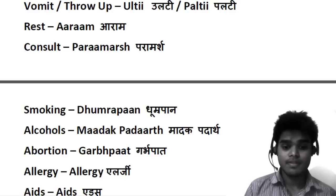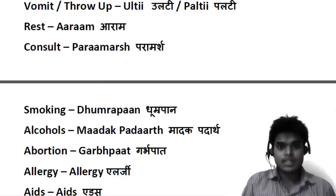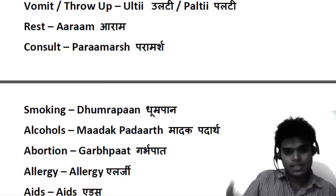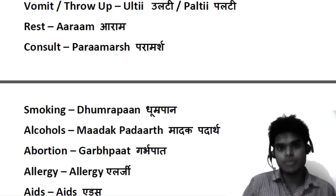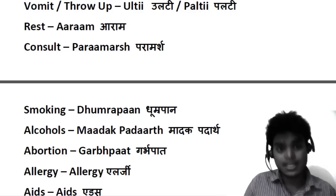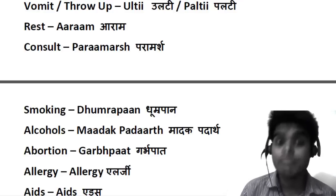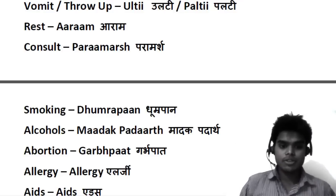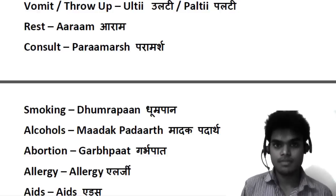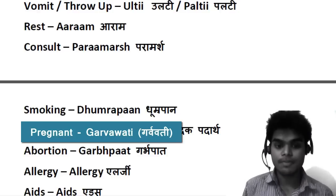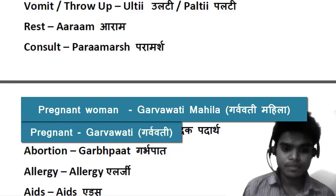For 'abortion' we say 'garbhpaat.' Garbh means pregnancy — when you get a baby in the stomach — and paat means falling or separating. So when the baby is lost from the womb, that is garbhpaat. And 'pregnant' women are called 'garbhvati mahila.' Mahila means female or woman. So garbhvati mahila means pregnant woman.